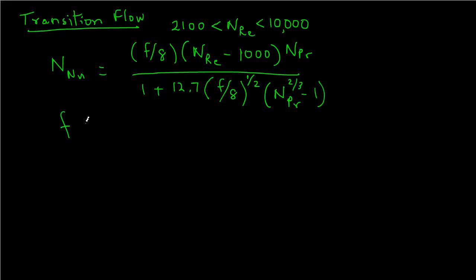F is the friction factor. You will recall that previously, when you studied fluid flow, you would have studied friction factor. Friction factor is obtained for smooth pipes. The formula is F equals 1 over [0.790 × ln(Reynolds number) - 1.64], and the entire quantity is squared.